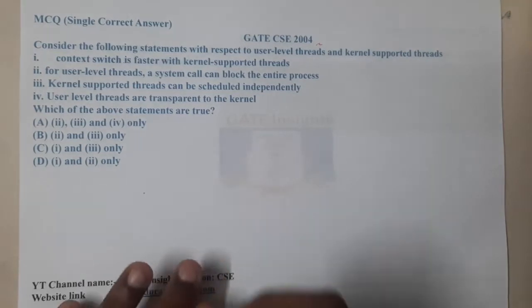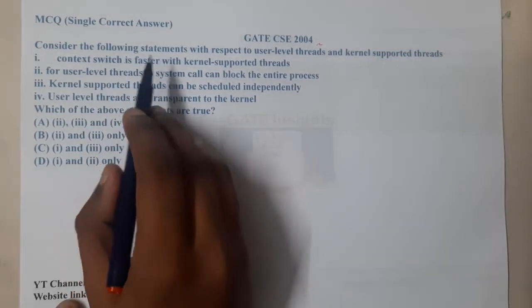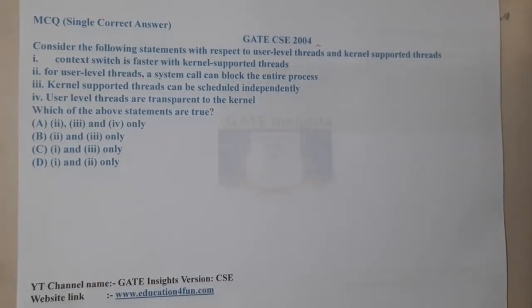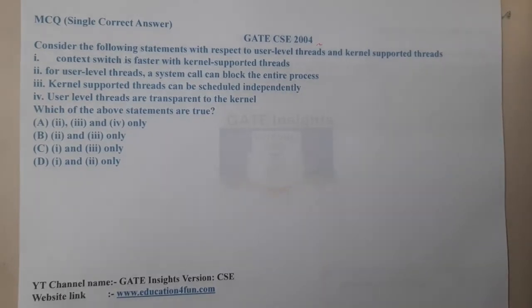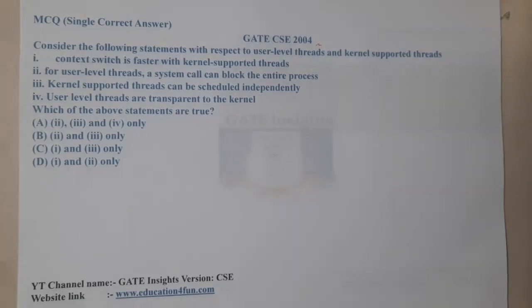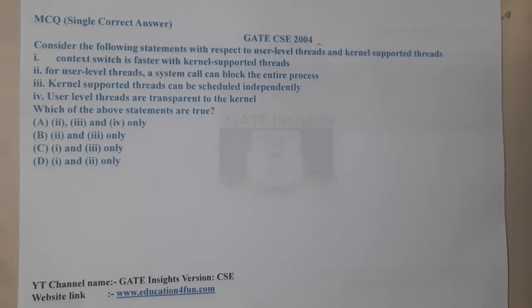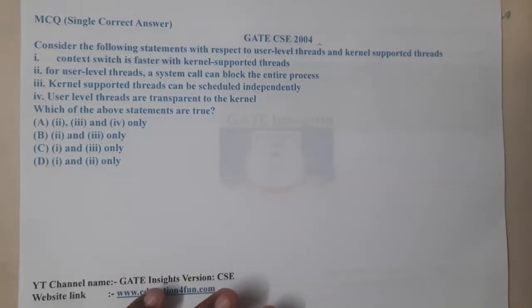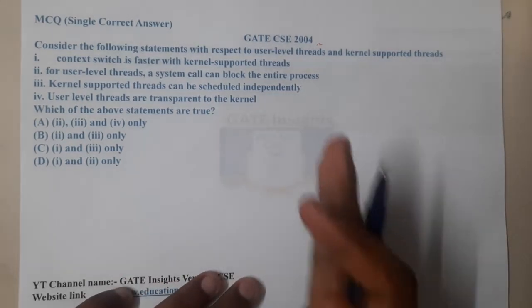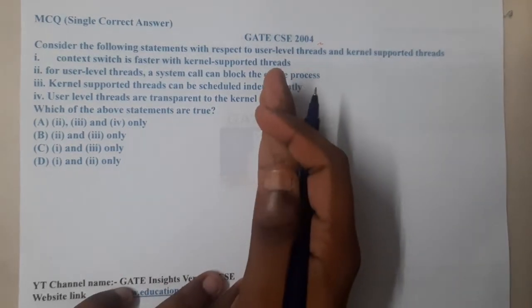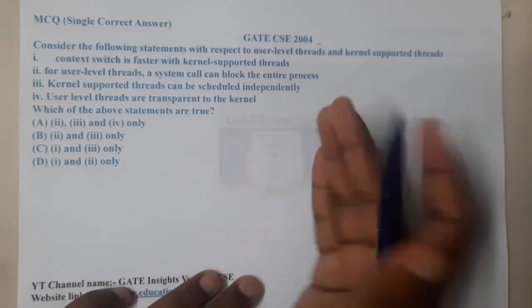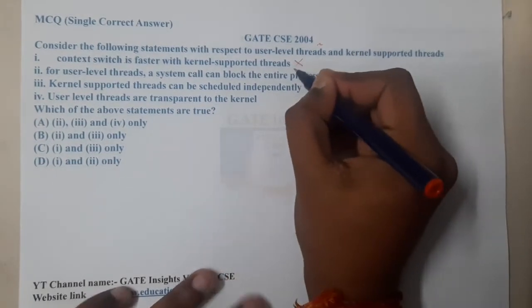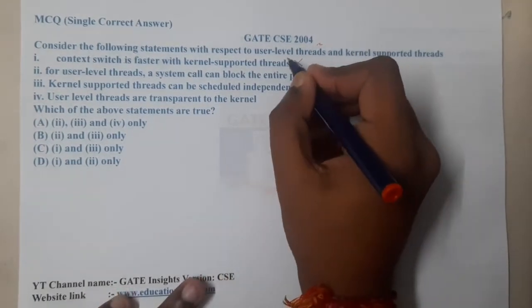Statement one says that context switching is fast in kernel-supported threads. This statement is absolutely false. Kernel-level threads take more time in context switching because they are known to the operating system, so the OS has to manage their swapping and everything, which takes more time compared to user-level threads.